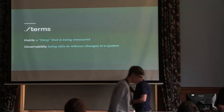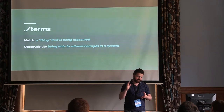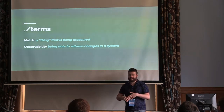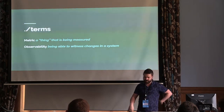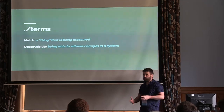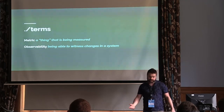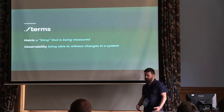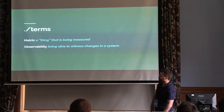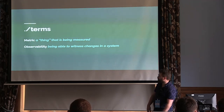To begin, I like to cover off some terms. Metrics define a thing that is being measured. Observability is just being able to witness changes throughout a system — that could be latency, throughput, errors, a deploy that's gone terribly — and an objective means for system state.